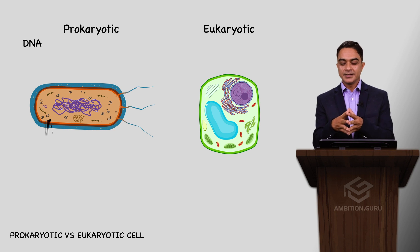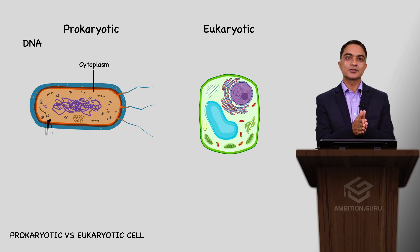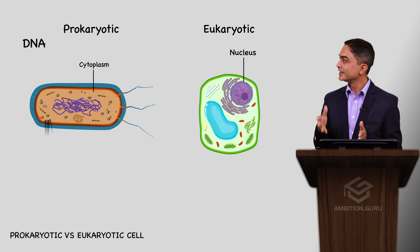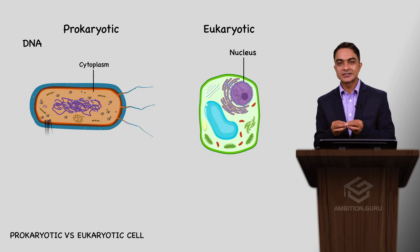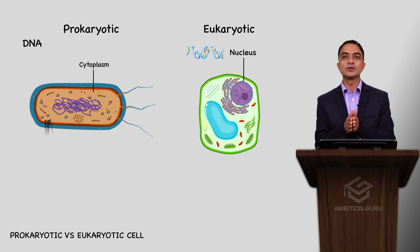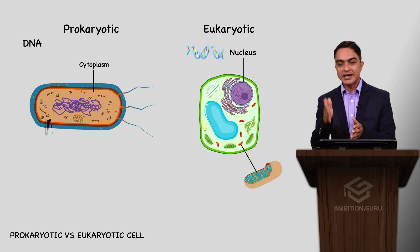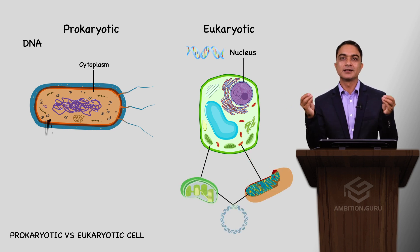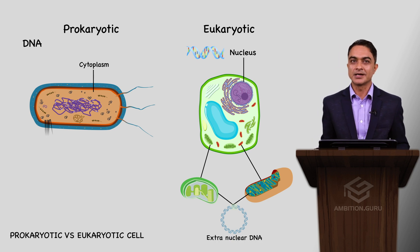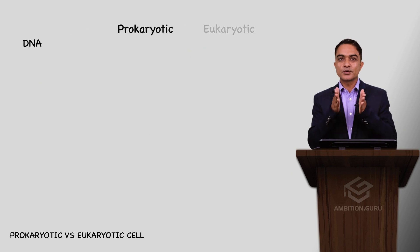Similarly, regarding DNA location: in prokaryotes, DNA is present in the cytoplasm. In eukaryotes, DNA is present in the nucleus as nuclear DNA, and also as extra-nuclear DNA in mitochondria and chloroplasts (plastids).